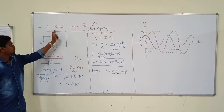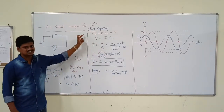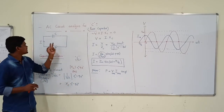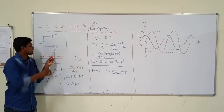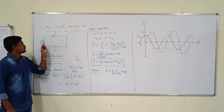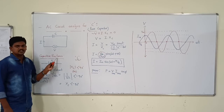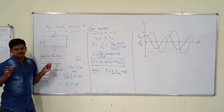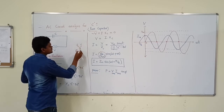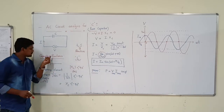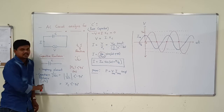Now we will discuss about the AC circuit analysis for capacitor — pure capacitor. Capacitor has two plates. Whenever single phase AC supply is supplied to the capacitor, current flows. Before that, we have to understand capacitive reactance. Inductor and capacitor are both reactive elements — they are imaginary elements. That is why both have reactances. Both inductor and capacitor are reactive elements.